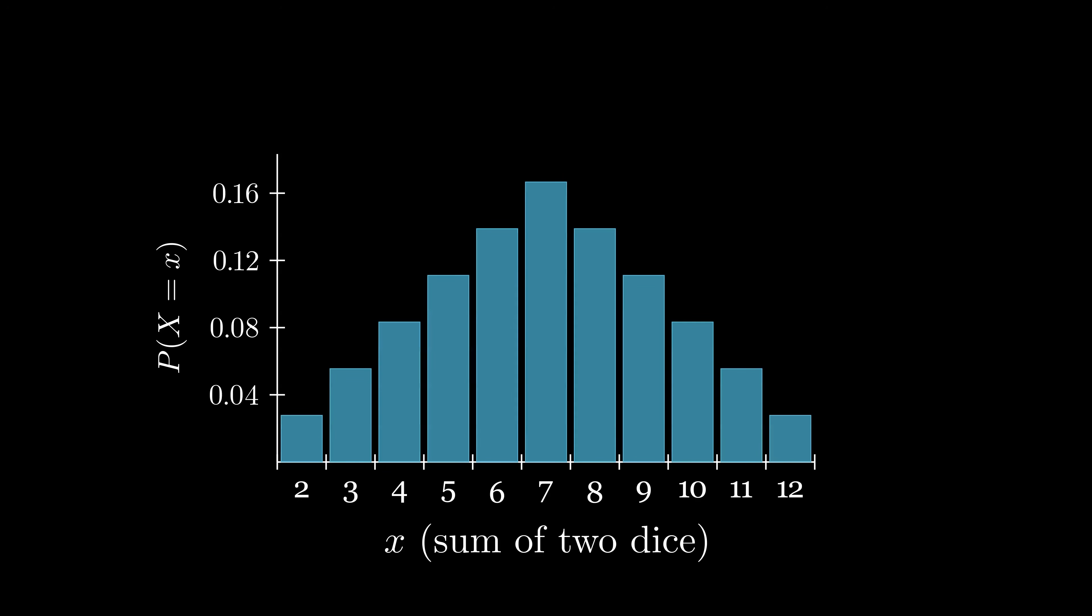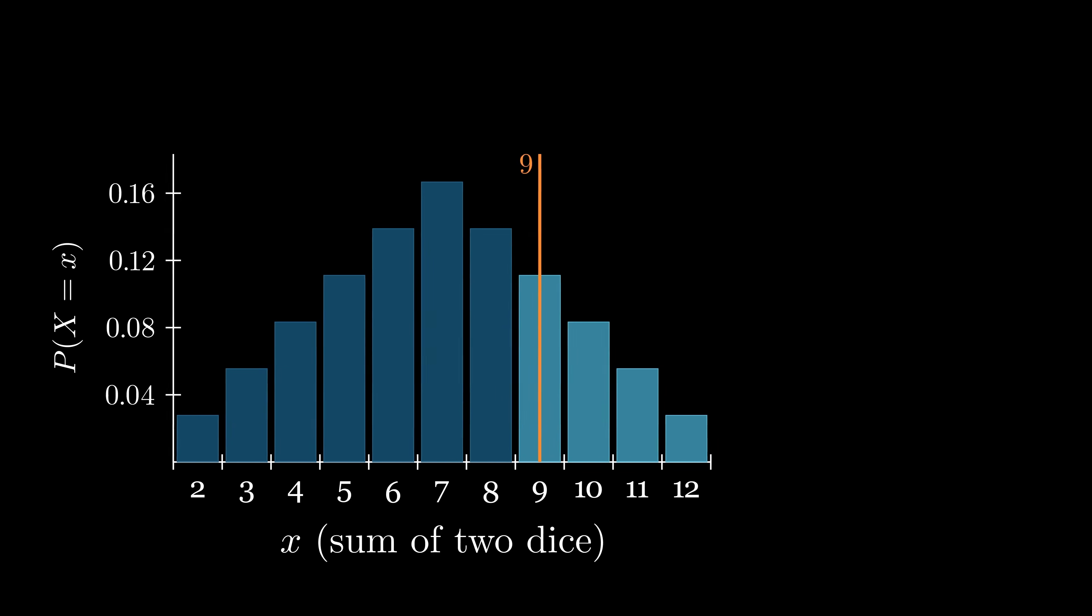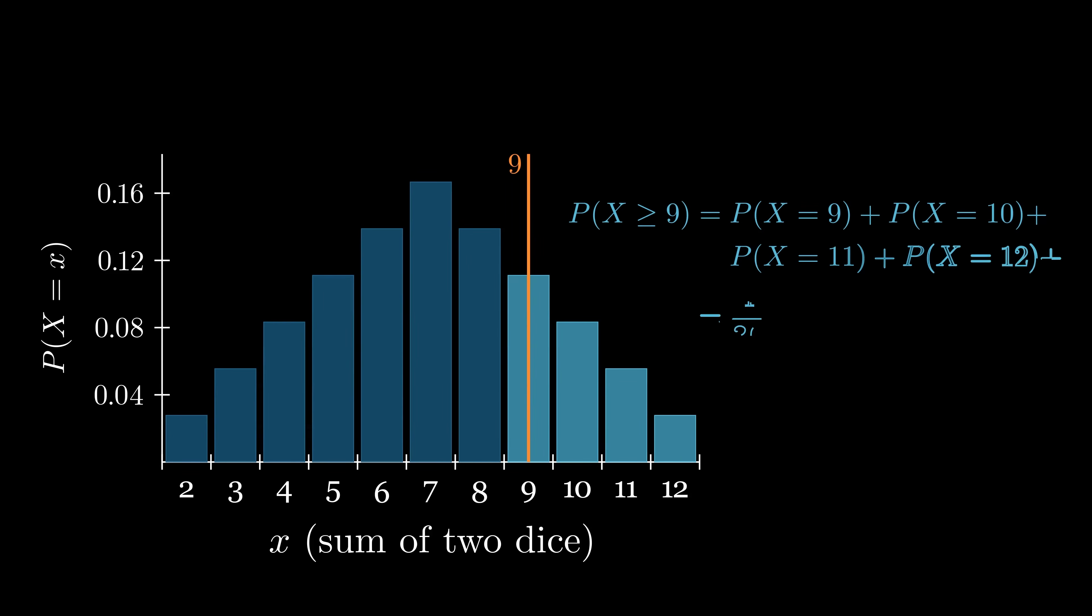If we want to get the probability that the sum is at least some number, say 9, we can just add up the probabilities for sums greater than or equal to 9. Note that this looks like adding up the size of all the rectangles on the right side of our plot.